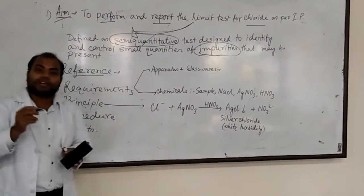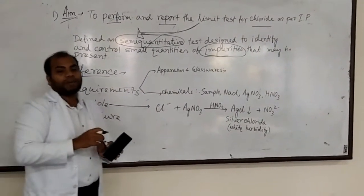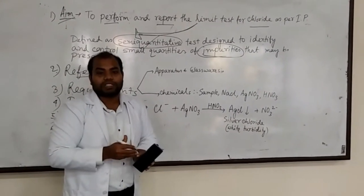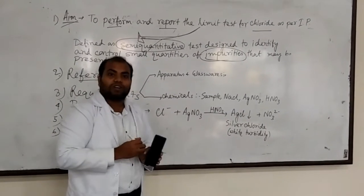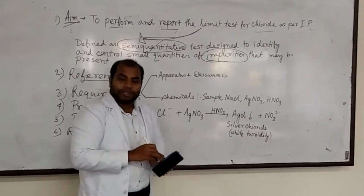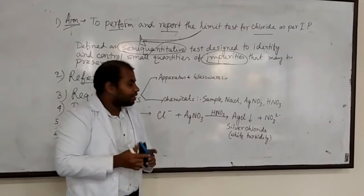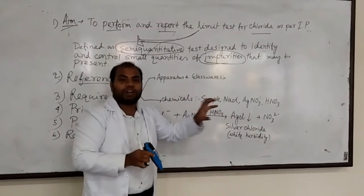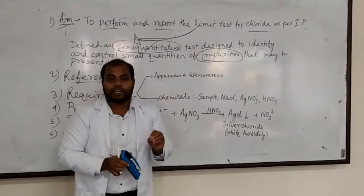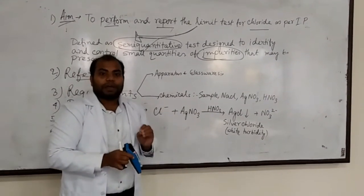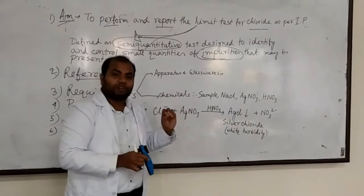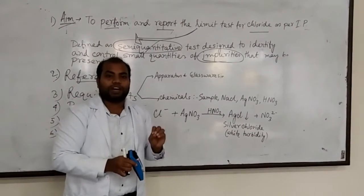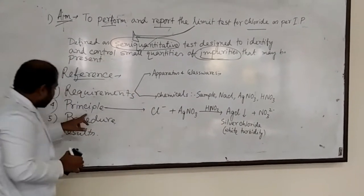Based on the semi-quantitative analysis of this opalescence or turbidity, we determine whether the limit of chloride ion exceeds the standard or not. According to IP, the standard compound for chloride ion is sodium chloride, and the permitted amount is 0.05% W/V as per the Indian Pharmacopoeia.